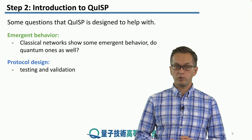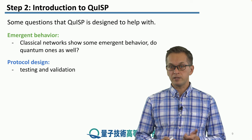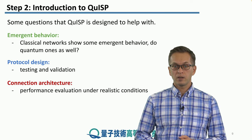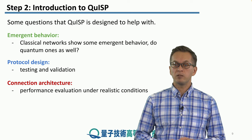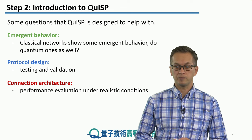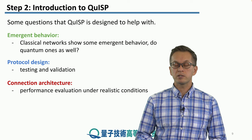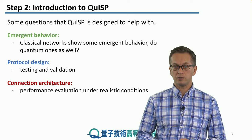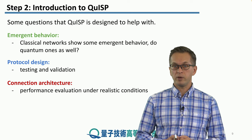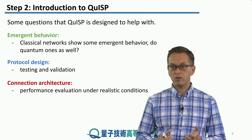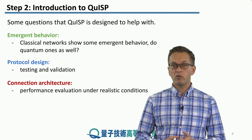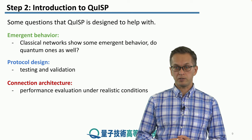QISP is designed to help you with protocol design, with its testing, and with its validation. Also, QISP is designed to help you with connection architecture. How do you evaluate the performance of a given type of connection architecture? Quantum nodes can be linked in very different ways, and depending on which architecture you use, the performance can vary quite substantially.